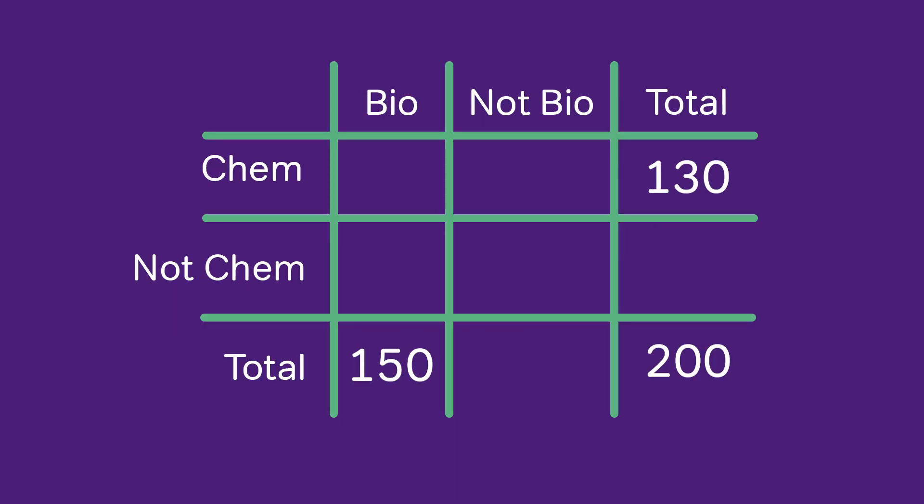So first of all, going across the bottom row, 150 in biology means there must be 50 who are not majoring in biology at all. Going down the column all the way on the right, 130 in chemistry means there must be 70 not in chemistry in order for the total to add up to 200.